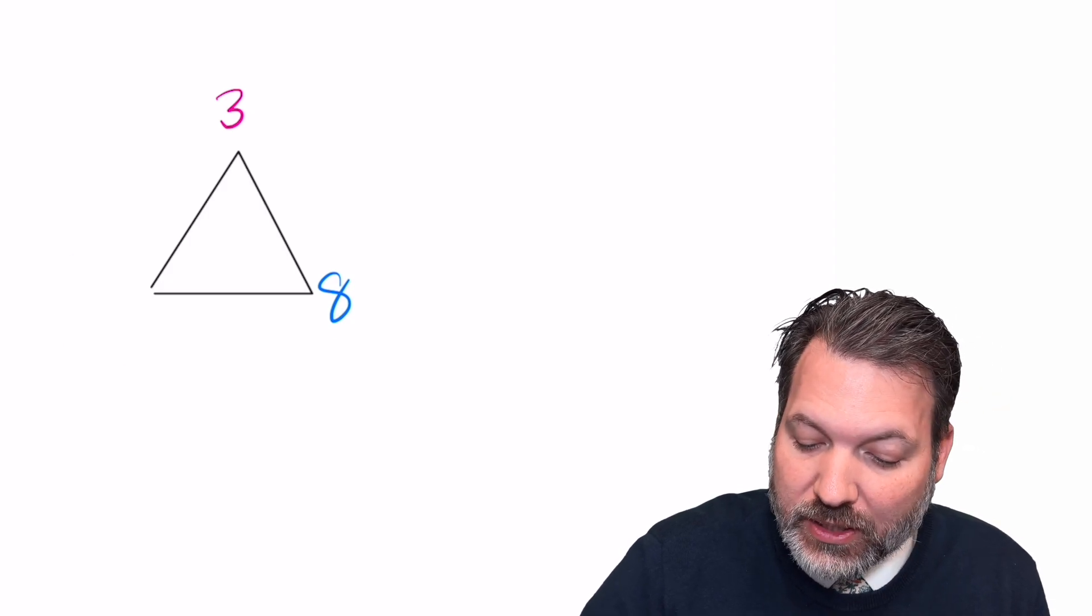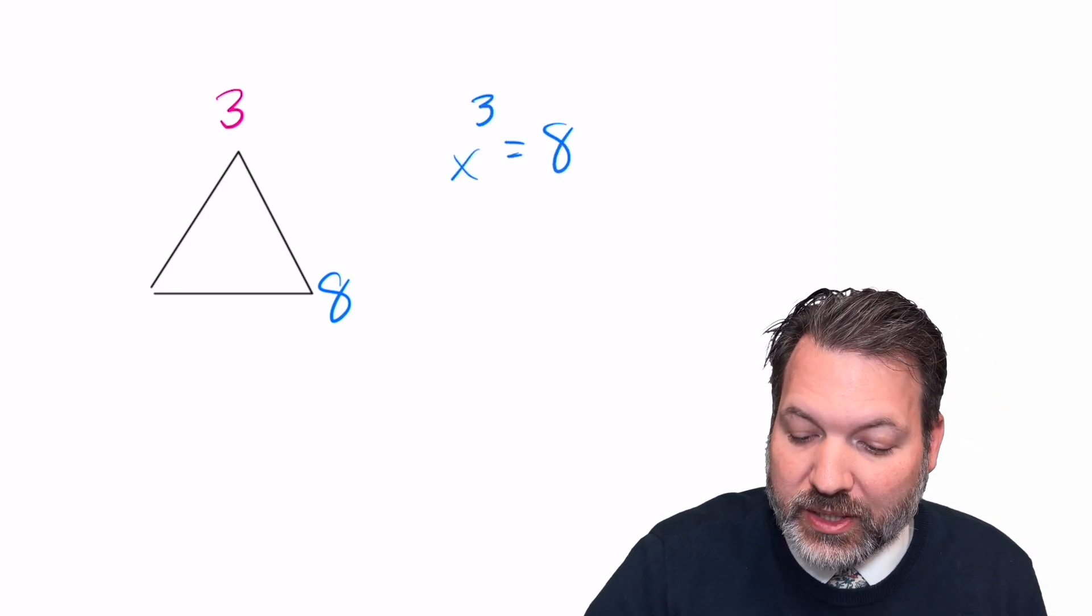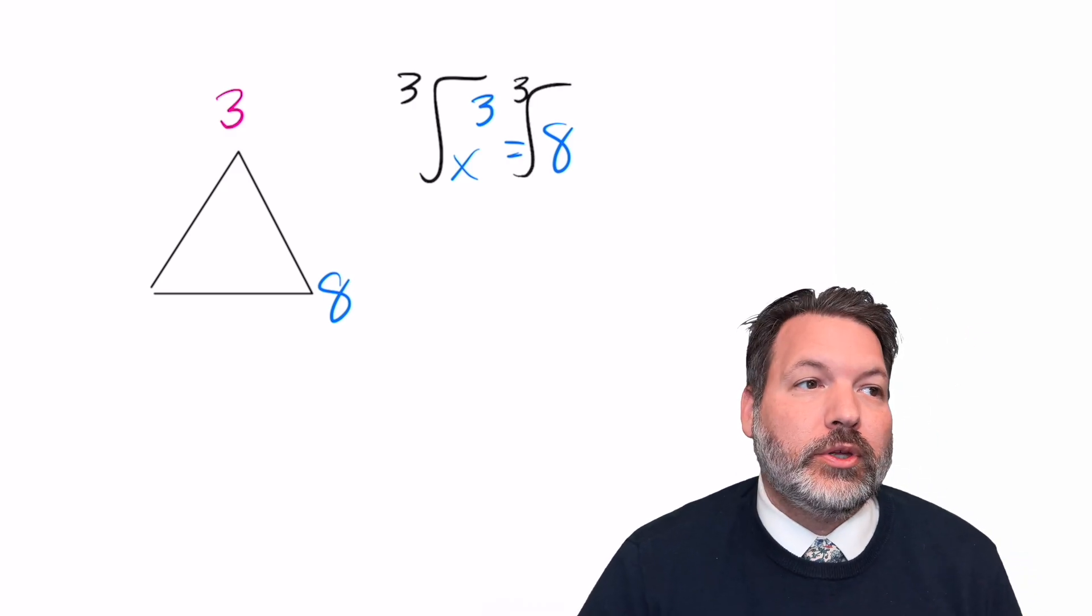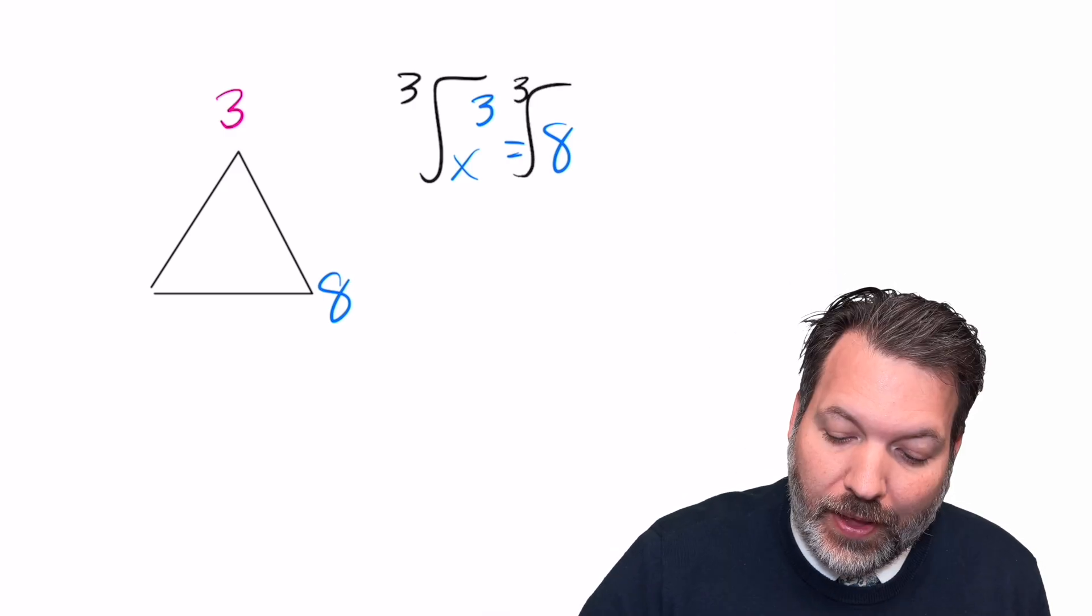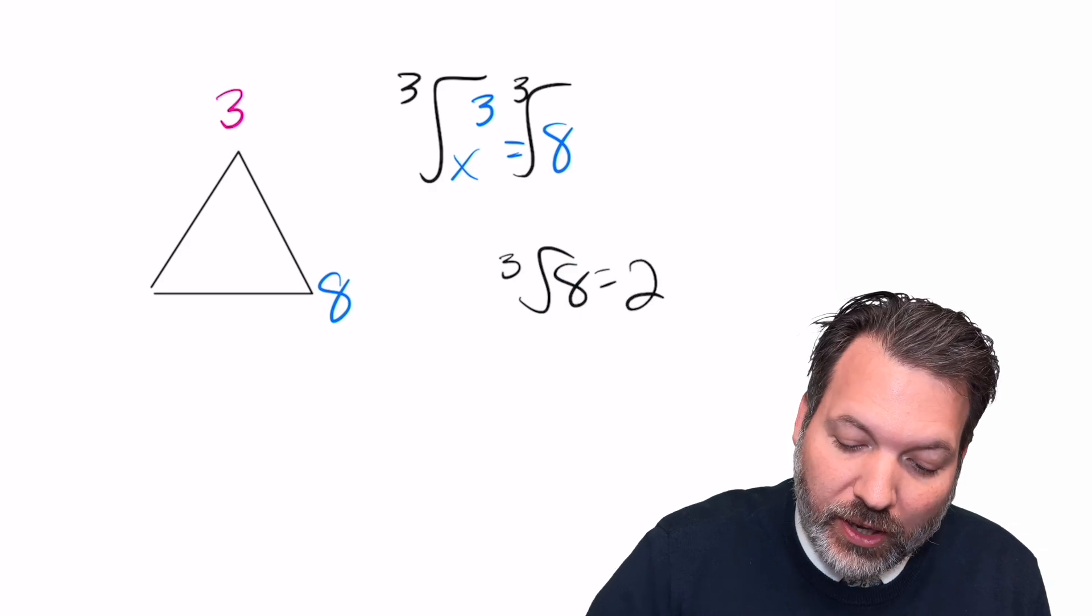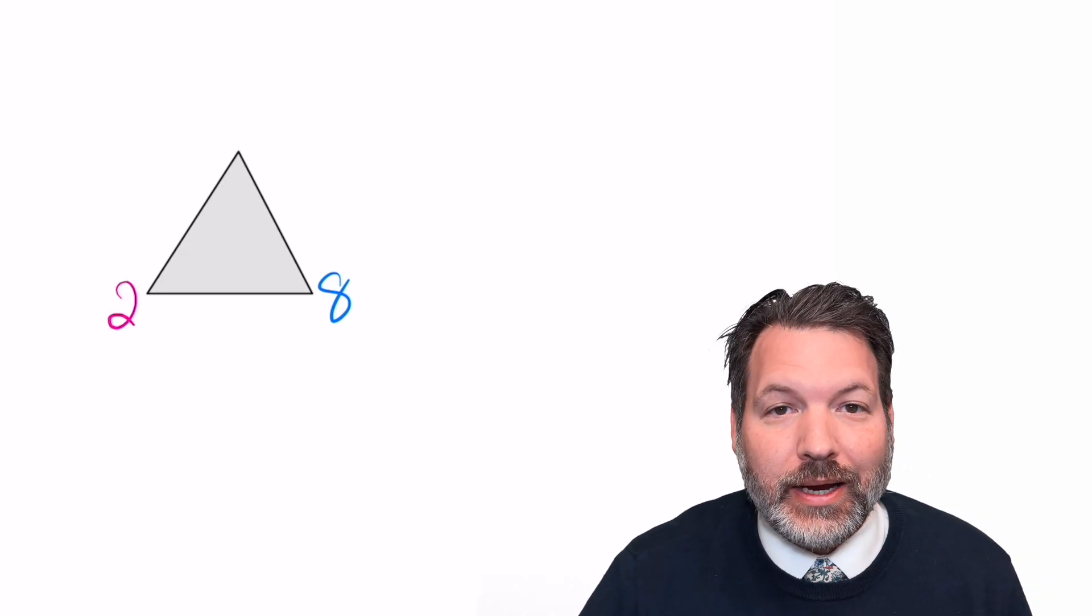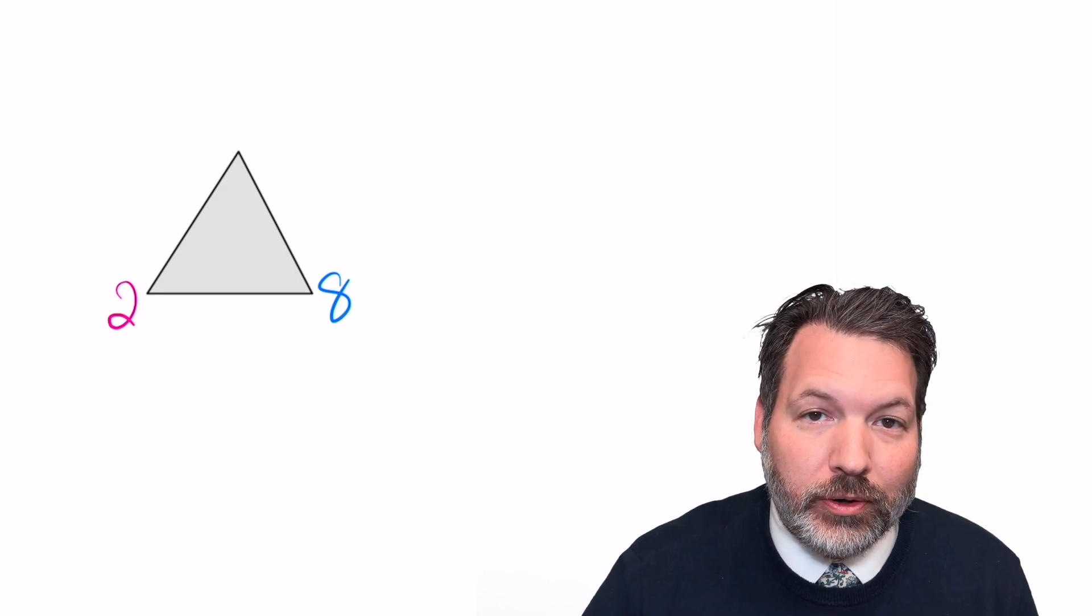If the thing we don't know is the base, if we're trying to recover some missing base, that's when we use a root of some kind, square root, cube root, fifth root, whatever. And that root operation is what will give us back the missing piece. But because exponentiation is not commutative, if it's the exponent that's missing instead, I need a different kind of inverse.